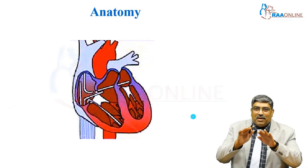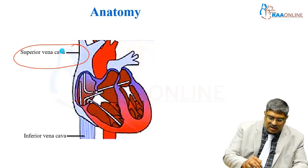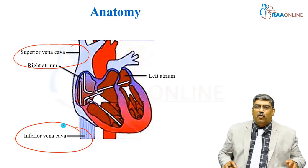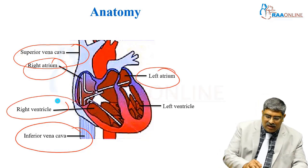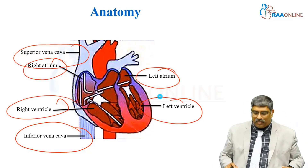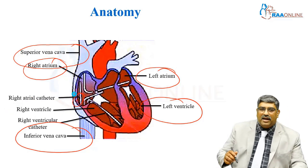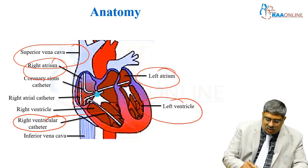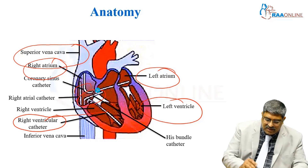What are the anatomical locations required for an EP study? The first and foremost is the superior vena cava and inferior vena cava, through which your guide wire goes into the heart. The four main chambers of the heart: right atrium, left atrium, right ventricle, and left ventricle. The catheters are placed as follows: the right atrial catheter, the right ventricular catheter, the coronary sinus catheter, and the bundle of His catheter.